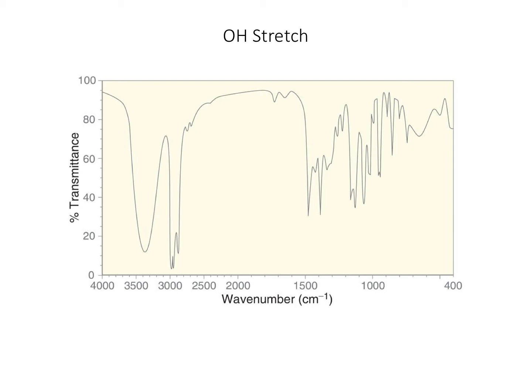The other things we look for besides double bonds, triple bonds, and CH stretches are alcohols, carboxylic acids, and amines. Alcohols typically appear around 3,400 wavenumbers. They're fairly intense and fairly broad — sometimes people describe these peaks as looking like swords.